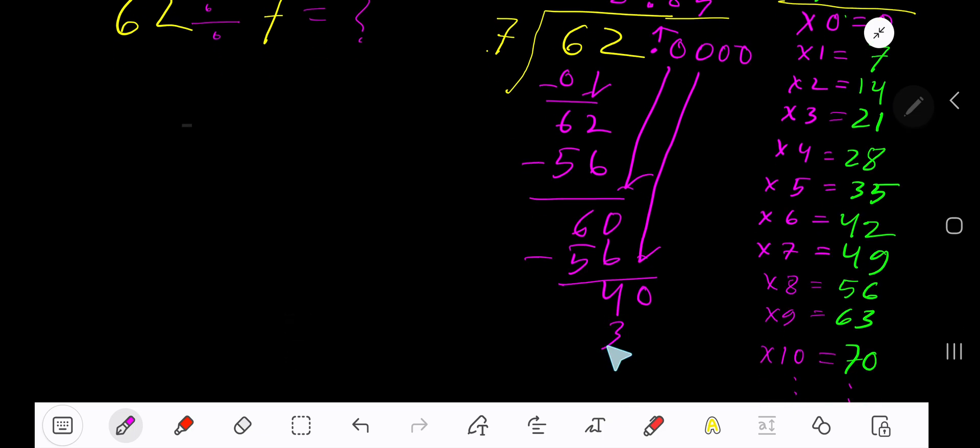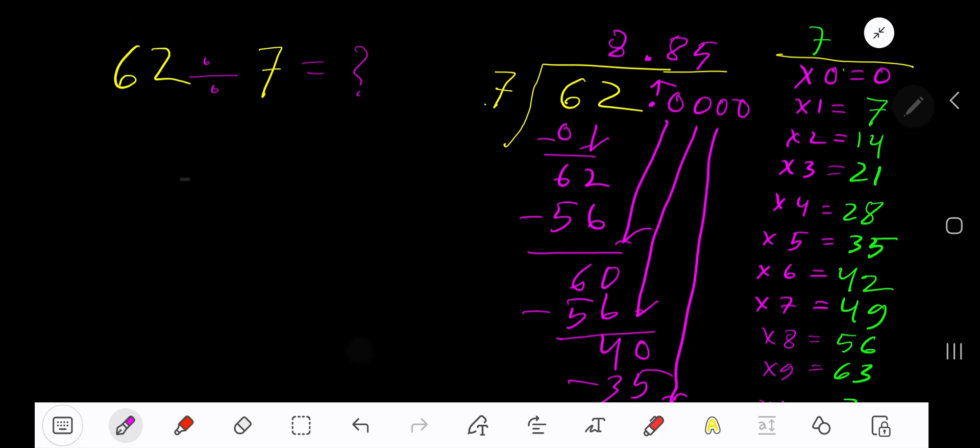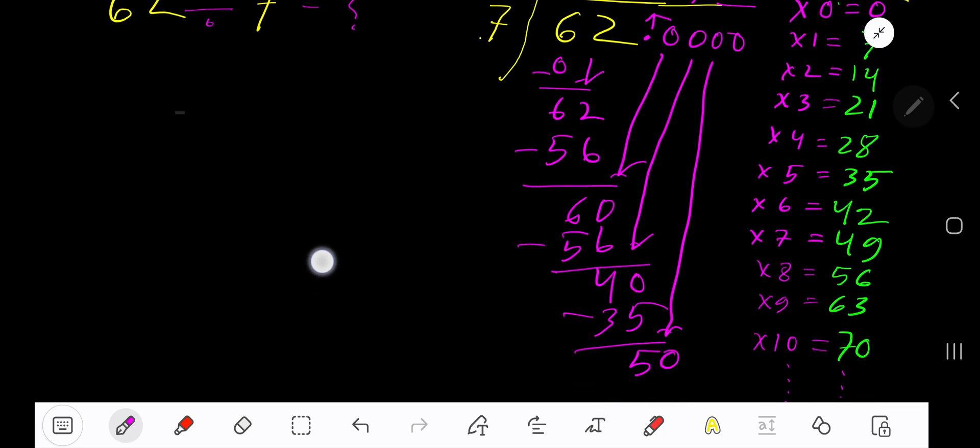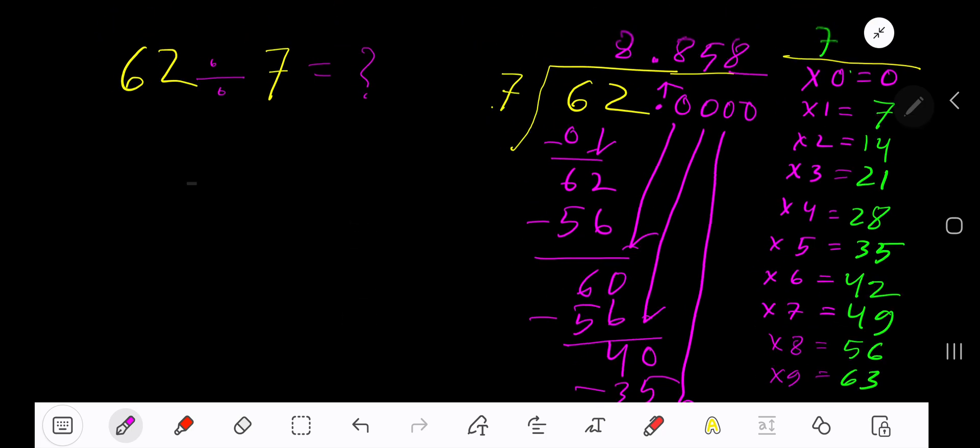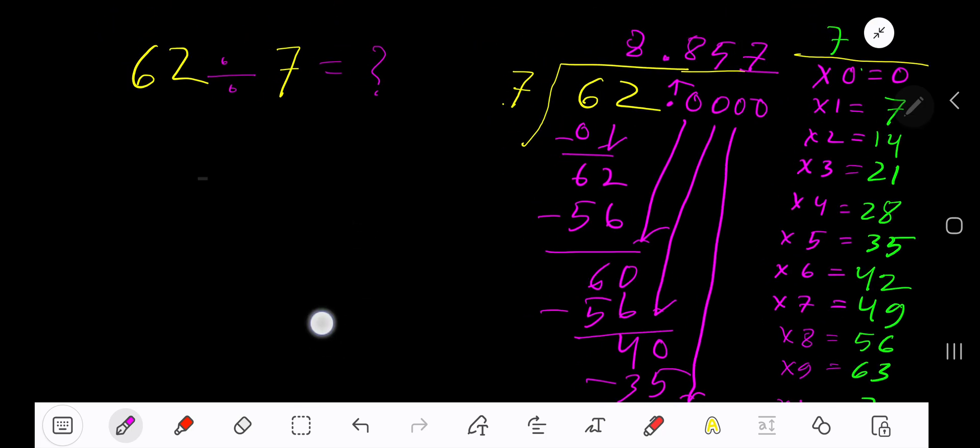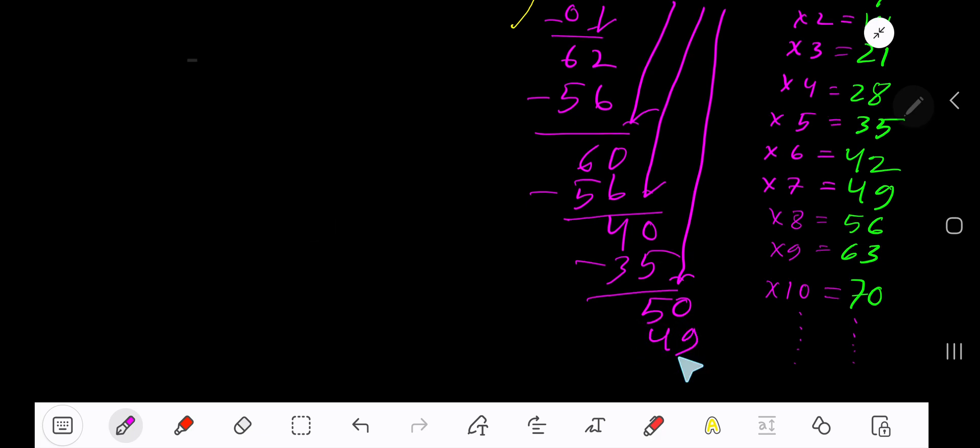Bring down another zero. 7 goes into 50 how many times? 8×7=56 which is greater, so we have to take 7 times. 7×7=49, subtract, getting 1. You can bring down more zeros.